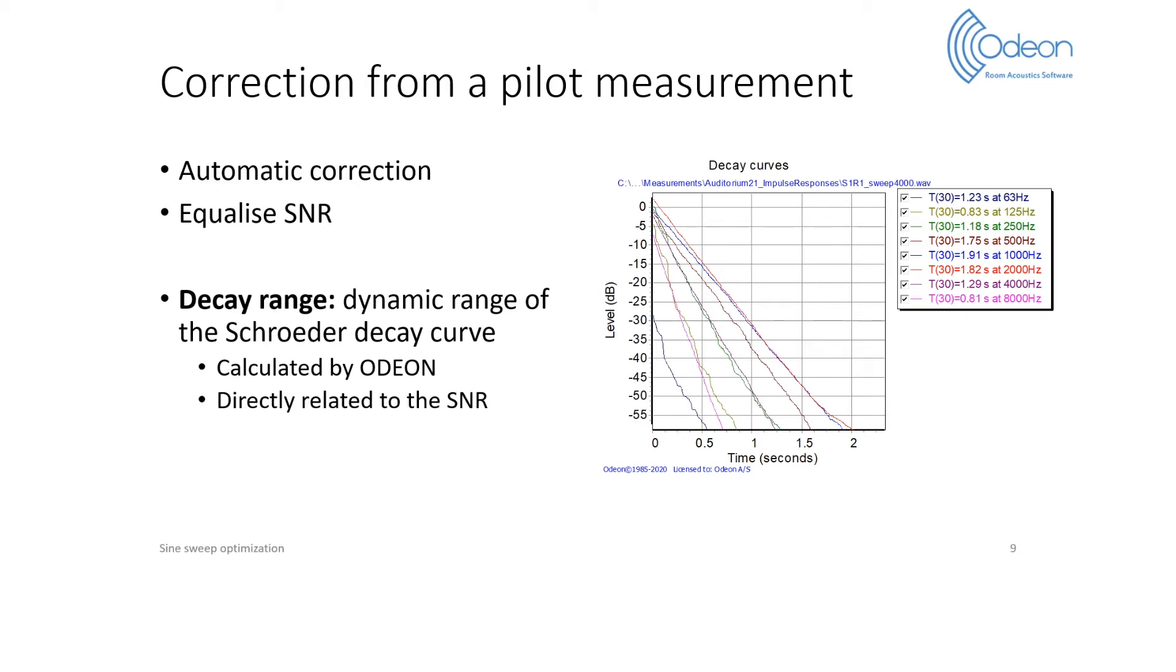Furthermore, it is related to the SNR, as larger SNRs will lead to longer decay curves. Finally, the Schroeder decay curves are directly used to derive the reverberation times, which are some of the desired room acoustic parameters. It is thus relevant to use decay curves to assess the quality of measurements.